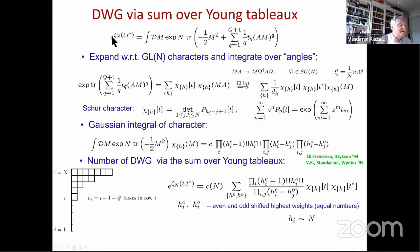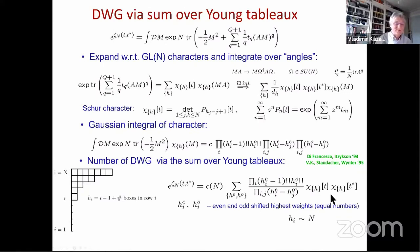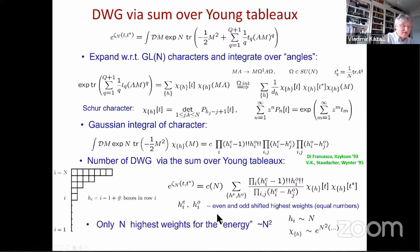Collecting all these facts together, we express the partition function of this matrix model as a sum over Young tableaux with equal numbers of odd and even highest weights. There is a factor with double factorials and products of differences, plus a product of two Schur characters — one of the original couplings and one of the dual couplings. They appear in different characters in a very symmetric form, which is natural: the original and dual graphs are in principle dual to each other.